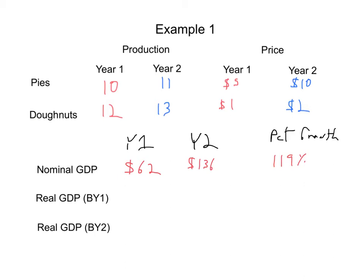So let's do this with a base year, and let's take year one as the base year. We're going to use these prices only. So that means in year one, it's 10 pies times $5 and 12 donuts times $1. Add that together, and you get a real GDP of $62. And then in year two, you're going to have 11 pies times the base year price of $5 and 13 donuts times the base year price of $1. If you add all that together, you're going to get 55 plus 13 equals $68. And that is a mere 9.68% growth.